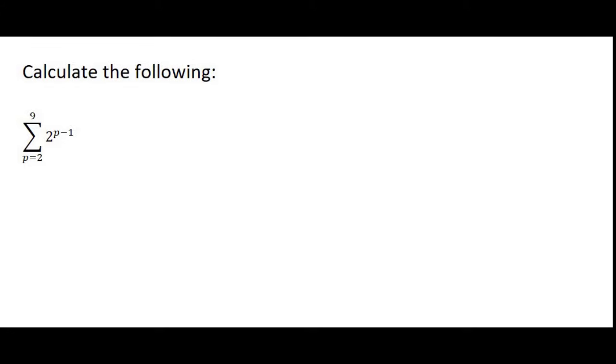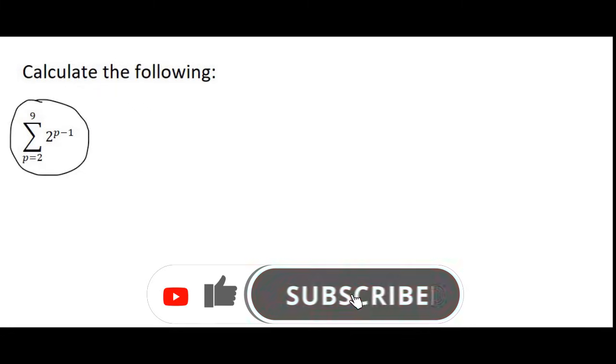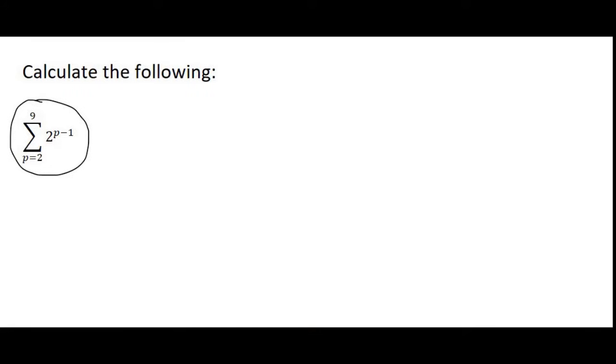So when you are asked to calculate the following, if you just look at this it doesn't really look like a question, but in fact it is. This funny symbol means calculate the sum of. So the technique we use is to go find term 1, term 2, and term 3.